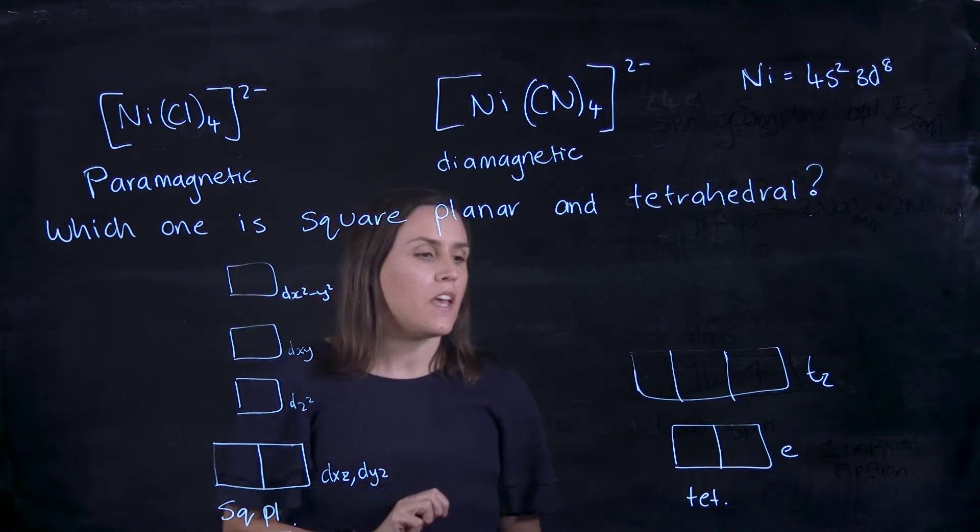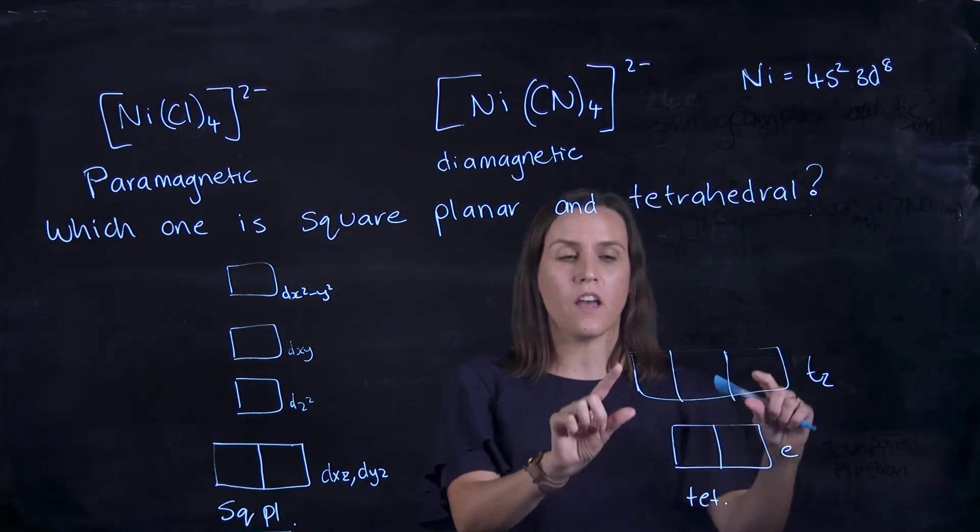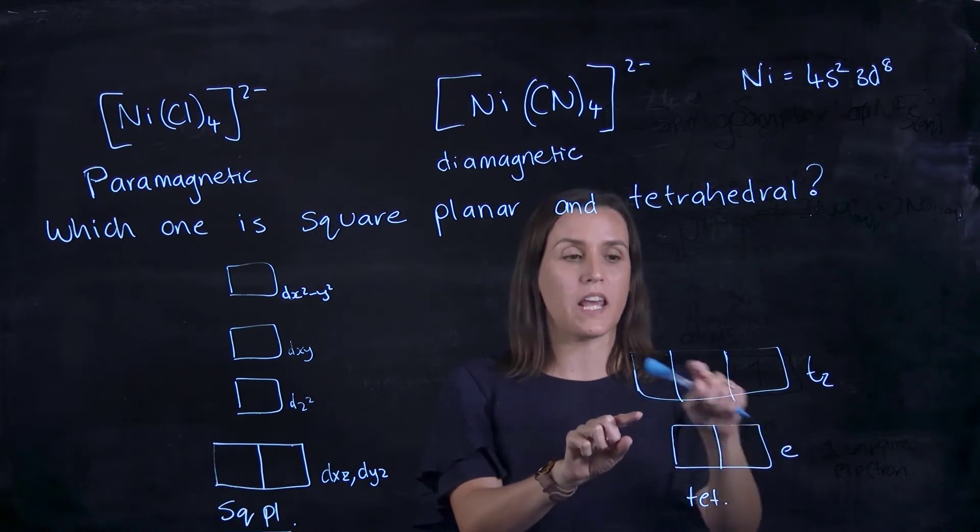For the tetrahedral, we've got the e set at the bottom and the t2 at higher energy. The gap's really small, so we put one in all the e's, all the t2's, and then we start doubling up.